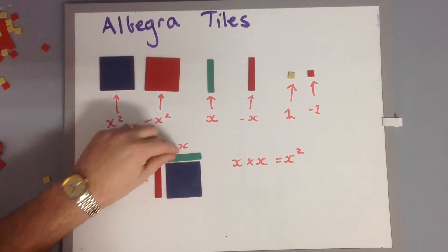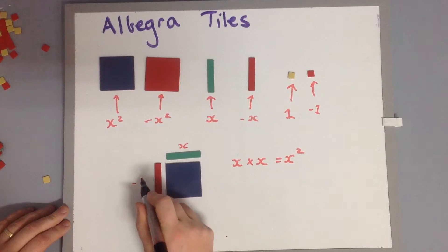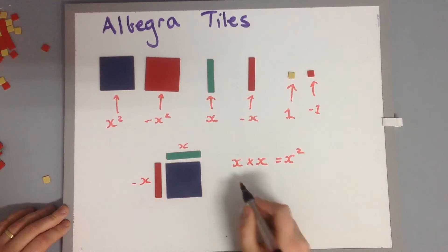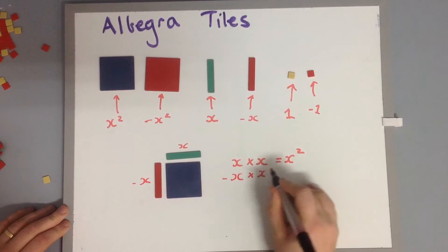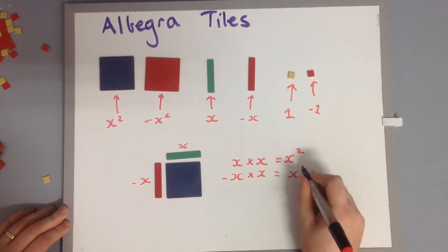And now this one is our red version, so it's negative x. That means we're going to have negative x times x. We know x times x is x squared.